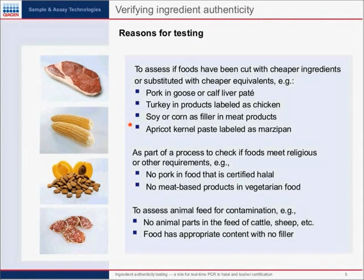Another example of cutting or substitution of ingredients would be using apricot kernel paste rather than almonds in food labeled as marzipan. Almonds are quite expensive, apricot kernels are much less expensive, and they are occasionally used in place of almonds and labeled as marzipan.